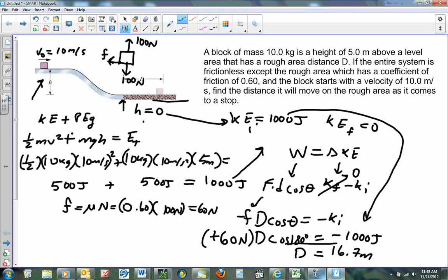So that's how far that block would move if friction was that big and it had that much energy, because friction would have to take away 1000 joules of energy. And so it's 60 times d times cosine of 180. If I want to write this out, that's going to be negative 60d equals negative 1000 joules. Divide both sides by negative 60 and you get d equal to 16.7. And that's how you do a work kinetic energy problem.